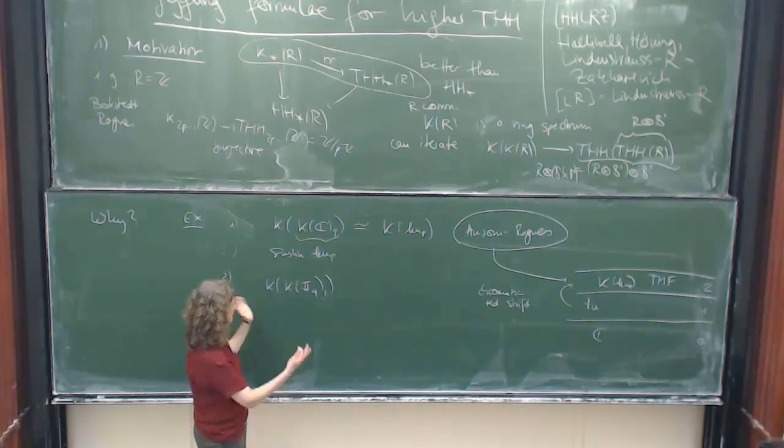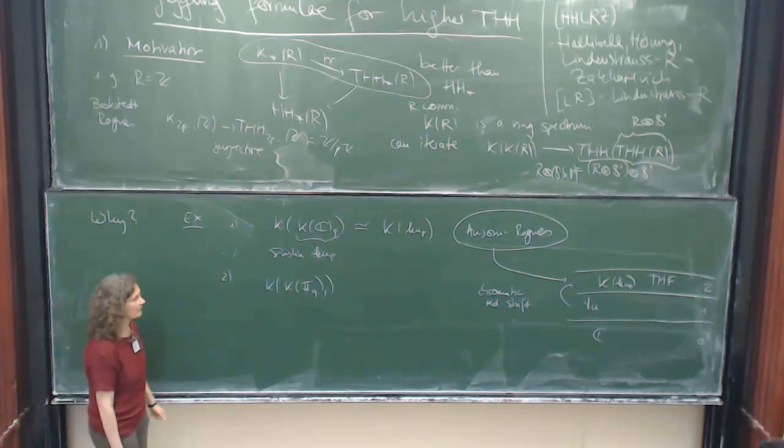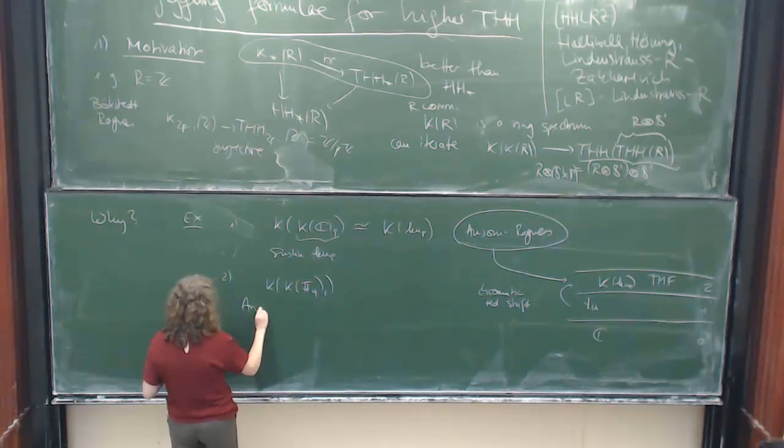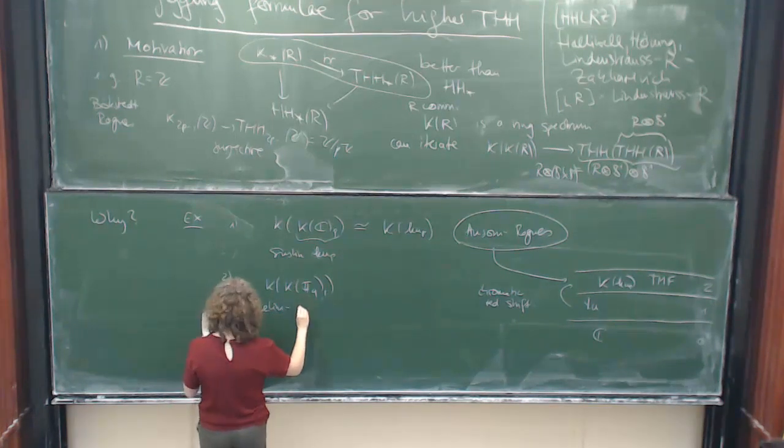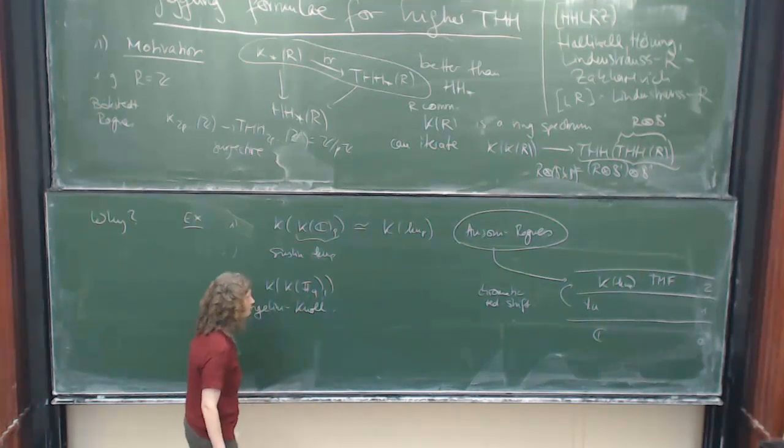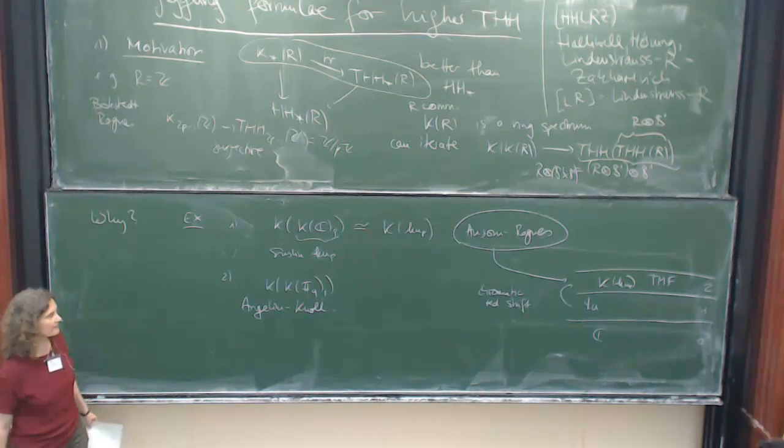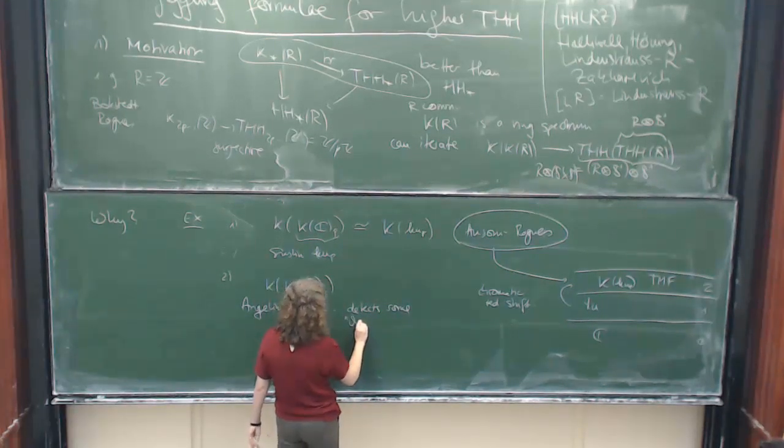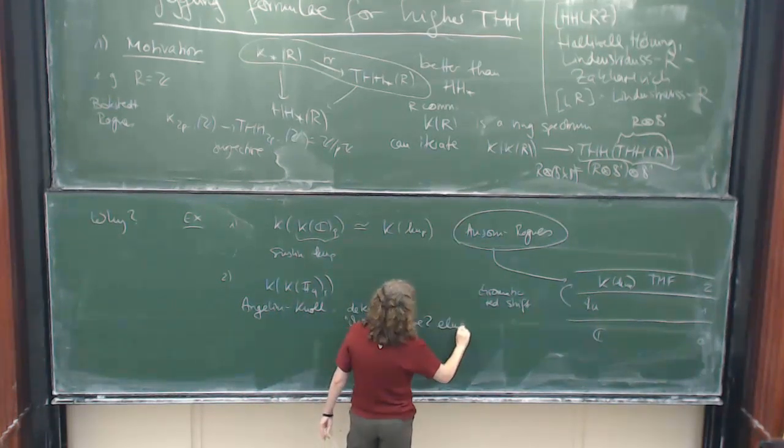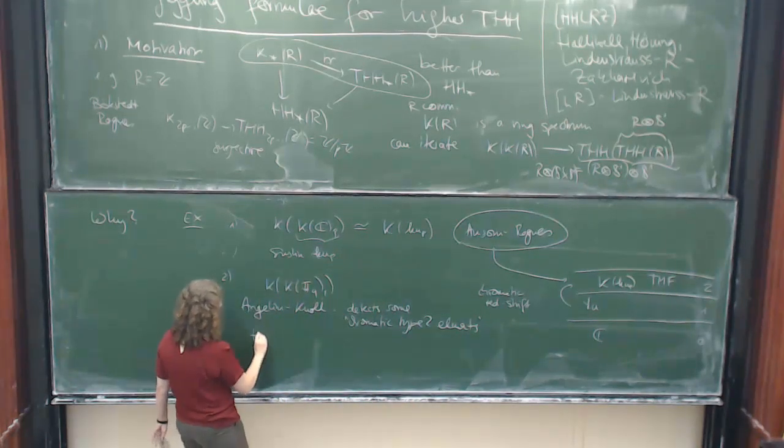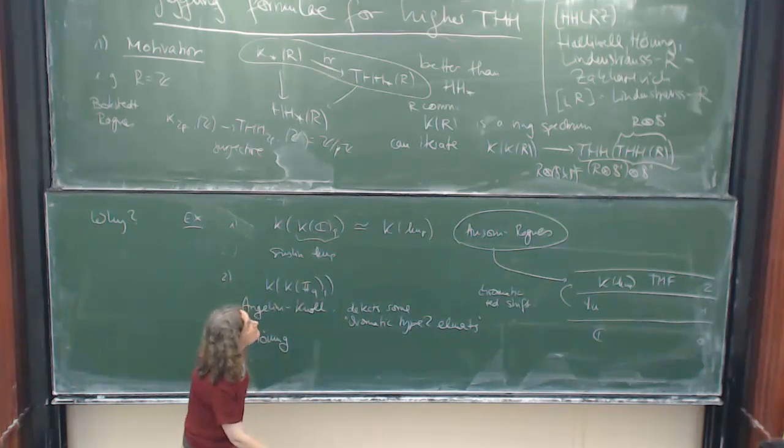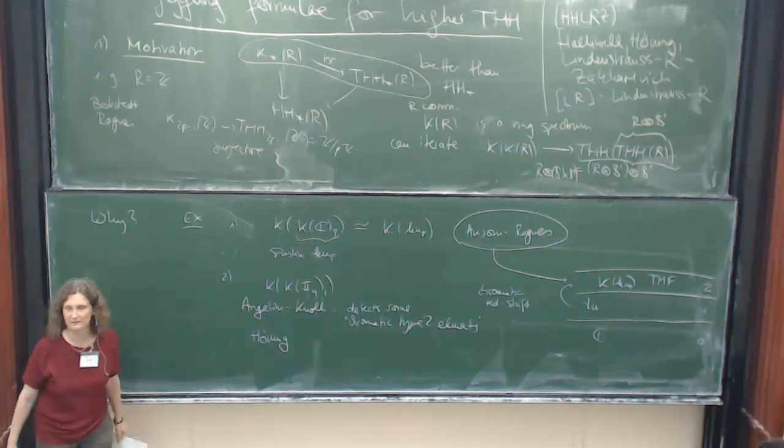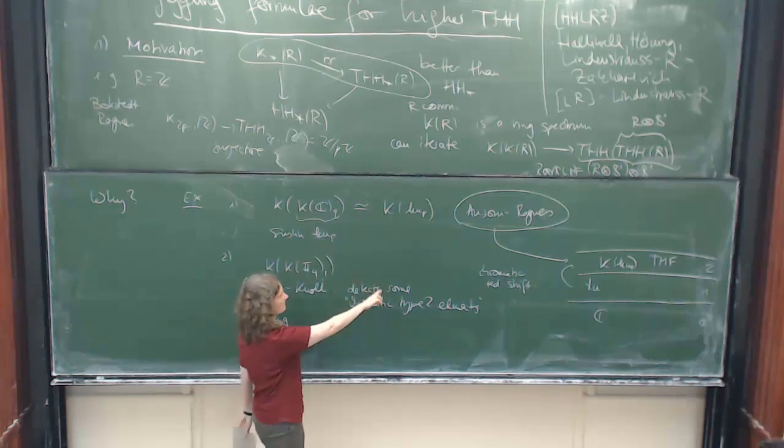So you just take this finite field, p-complete, take K-theory out of this. And again you see phenomena like this, and now I should try to spell his name in a correct manner. So Gabe Angelini, it's maybe a bit harsh to say this detects chromatic redshift, but what does it see? It detects some, let me be even less precise, chromatic type 2 elements.